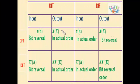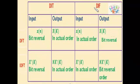To find the DFT using the DIF algorithm, we take x(n) in the actual order as input, and the output x(k) will be in the bit-reversal order.